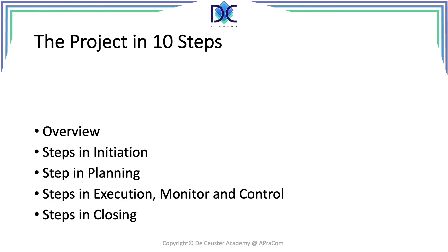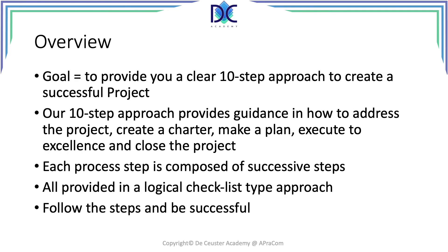Quality, procurement, stakeholder, and communications management are not described here at all or just mentioned shortly. We will look deeper into the steps that are part of the different project management process steps like initiation, planning, execution, monitor and control, and finally closing. The different elements that will be described in the following slides can be used as a checklist. Once all elements are checked, you are sure you covered 90% or more of all processes to be completed.